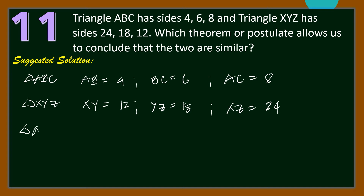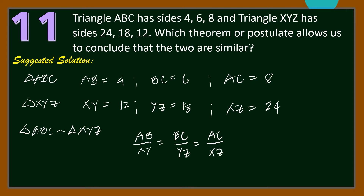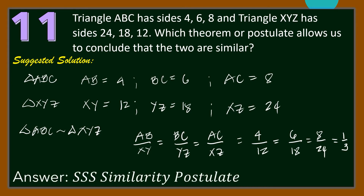If triangle ABC is similar to triangle XYZ, then the ratio between corresponding sides AB over XY equals BC over YZ equals AC over XZ. That is 4 over 12 equals 6 over 18 equals 8 over 24. Notice that all ratios are equal to 1 third. Hence, corresponding sides are proportional and the scale factor is 1 third. Therefore, the two triangles are similar by the SSS Similarity Postulate.